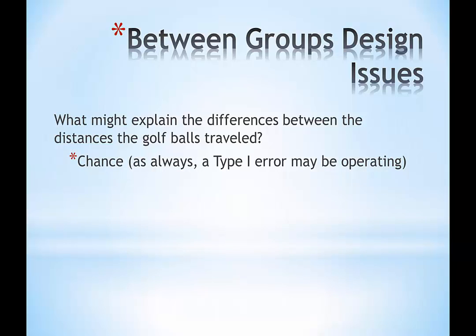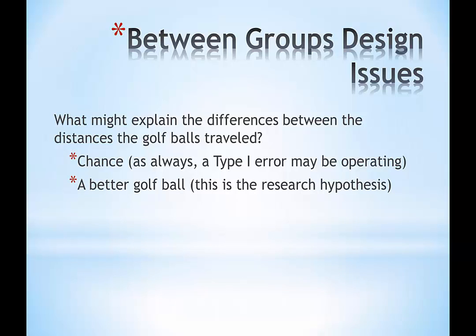First, there's always chance—we're dealing with human beings. This we sometimes call a type one error, which you'll hear about in a different screencast. Those five people might just tend to be different from the other five people; it could be random chance operating. Or it could be a better golf ball—that's what the manufacturers of golf ball two want to be able to say.